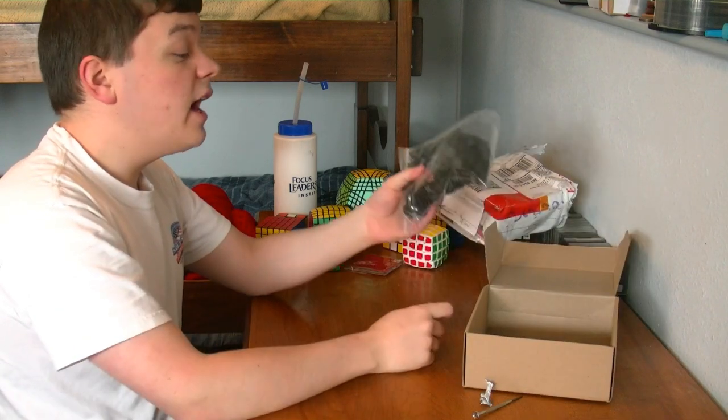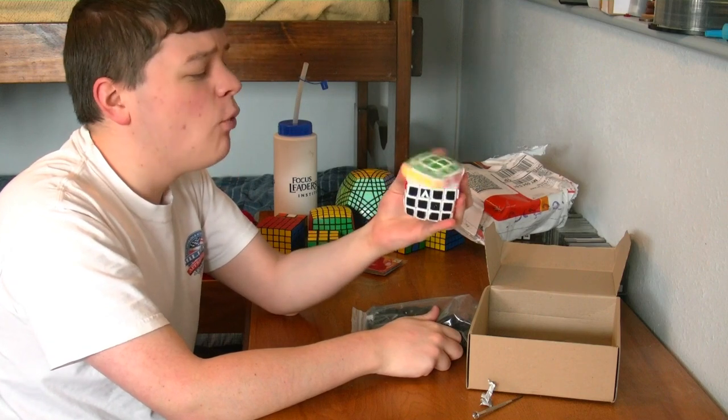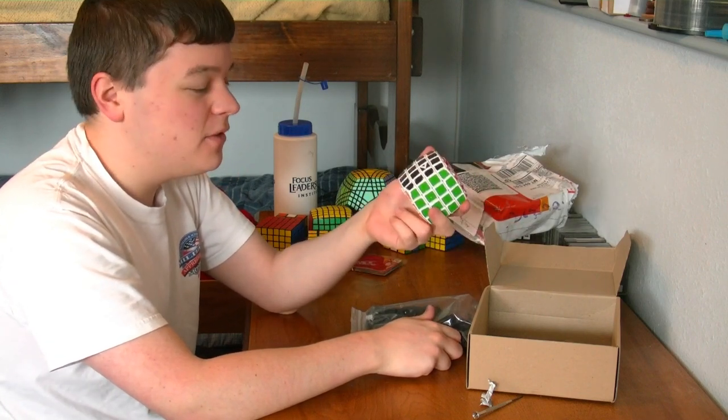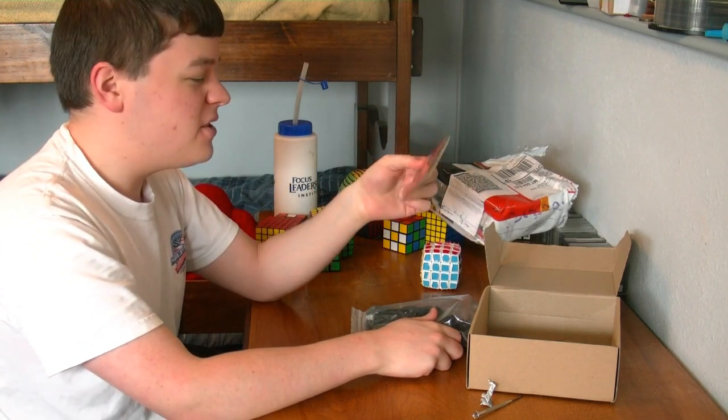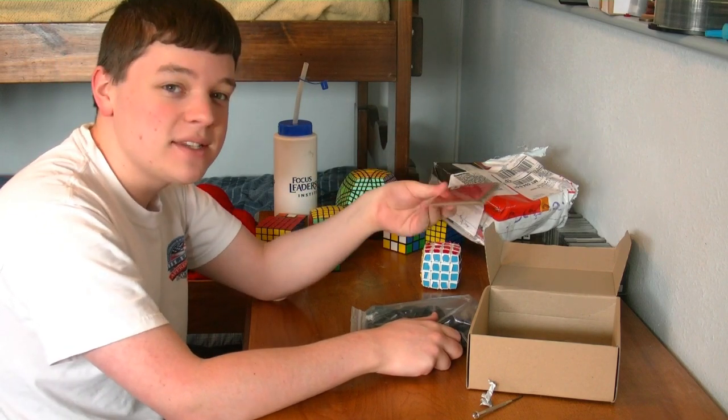This time I got the DIY kit because the stickers on the old V-Cube 4 have worn out very easily. They don't seem to be any better than the stickers you'd find on a typical Rubik's Cube. So I got some Cubesmith tiles for it, and I'd rather not have to peel off all of the stickers. It seems a lot easier just to reassemble it.